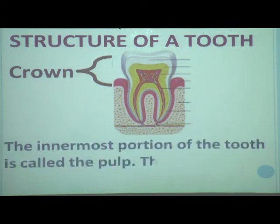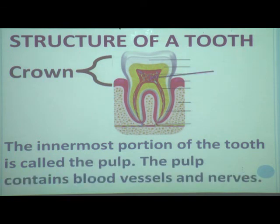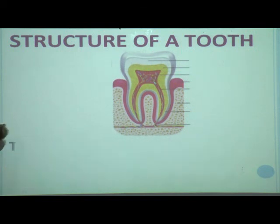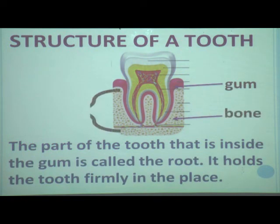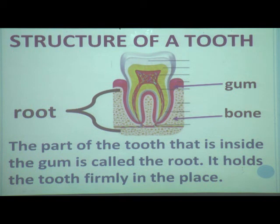The innermost portion of the tooth is called the pulp, and the pulp contains blood vessels and nerves. The root holds the tooth firmly in its place, just as the root of a plant holds the plant firmly in the soil.